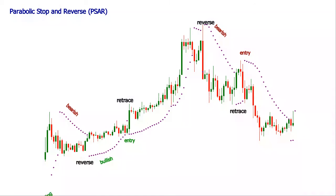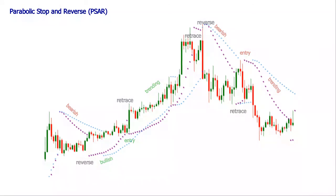As trending and ranging conditions alternate in most markets, the indicator aims to signal the beginning and the end of those stages or a change in market conditions. The values of the indicator are determined by the two parameters traders are setting. The dots follow the price action and tend to get progressively closer to the current price the longer the most recent price evolution took to develop.